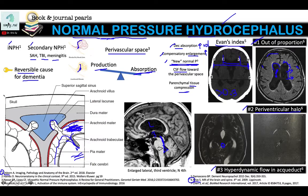In this example, there is a prominent aqueduct of Sylvius. When we perform phase contrast MRI — a study to assess CSF flow — we get an abnormal flow void, which denotes increased velocity or flow at this region. That attests to the abnormal hemodynamics.